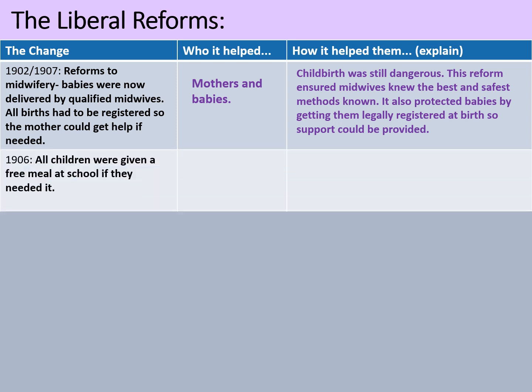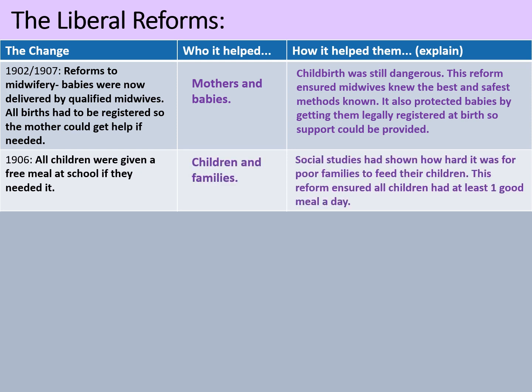Then in 1906, all children were given a free meal at school if they needed it. Social studies had shown how hard it was for poor families to feed their children, and this reform ensured that all children had at least one good meal a day, which was really crucial for them. One of the reports that found this was by Joseph Rowntree, the chocolatier who came from York. He studied the population of York, including some of his own workers, and was shocked to find how difficult it was for children to get healthy meals.